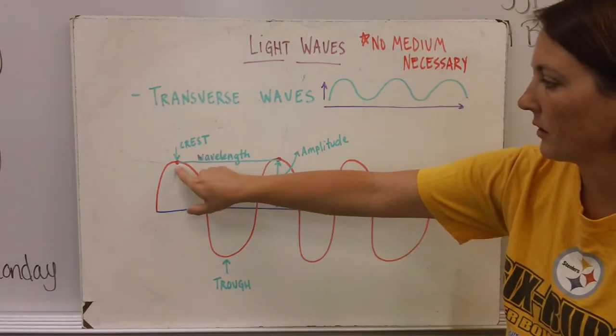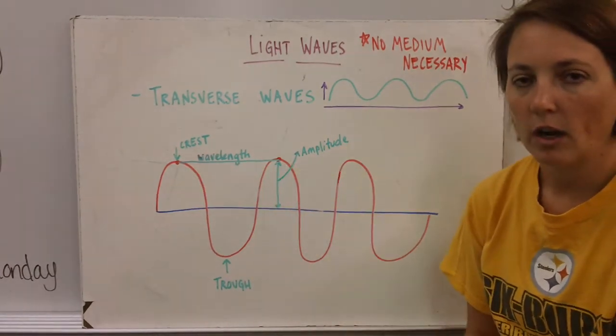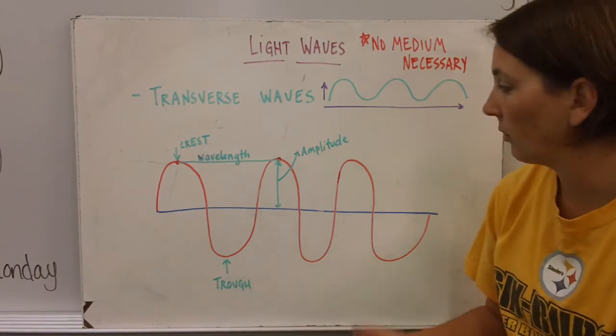The wavelength is the distance from one crest to the next crest. And some wavelengths are very short, other wavelengths are very large.